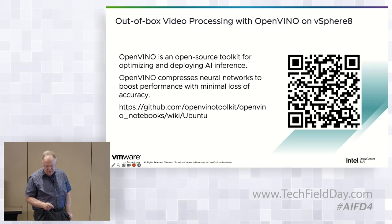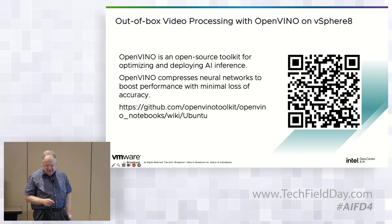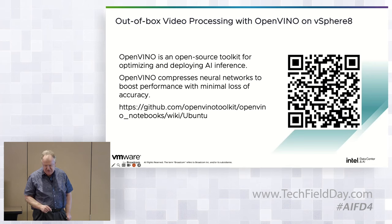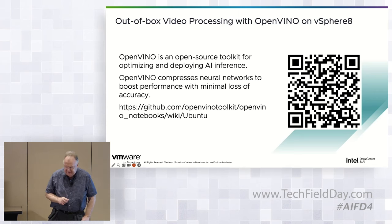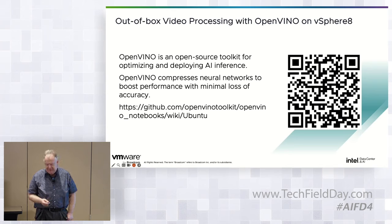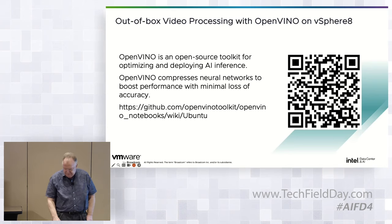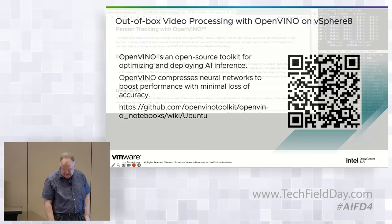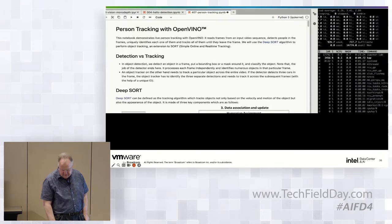We're running video processing on an Intel Xeon 4 Sapphire Rapids CPU. I'm using the OpenVINO toolkit for compressing the neural network, using a set of Jupyter notebooks and following a tutorial from the OpenVINO GitHub site. The QR code on the screen links to the OpenVINO instructions, so if you want to try this on your own Sapphire Rapids or Emerald Rapids CPUs, you can.